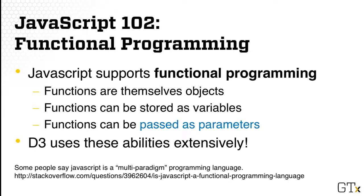JavaScript supports functional programming style. A lot of people say that JavaScript is more like a multi-paradigm programming language because it also supports other programming styles. What that means about functional programming is that functions are themselves objects. That means they can be stored as variables, and because of that, they can also be passed as parameters into methods. D3 uses this ability extensively.